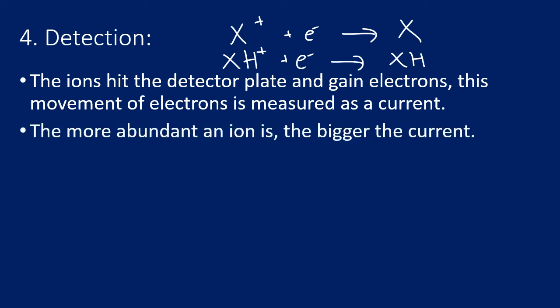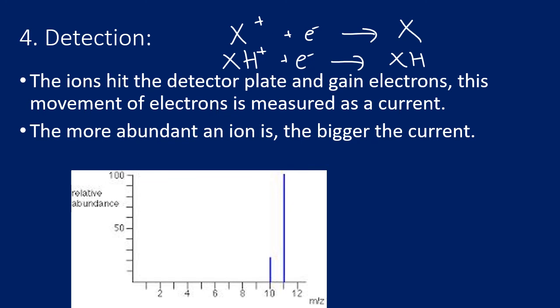The more particles that hit the plate at any given time, the bigger the movement of electrons and therefore the bigger the current. So the size of the current is directly linked to the abundance of that particle — the more abundant an isotope, the bigger the current. Here we get our first glimpse of what a mass spectrum looks like: this sample contained two different particles, one with a mass-to-charge ratio of 11 (most abundant, biggest current) and one with a mass-to-charge ratio of 10.